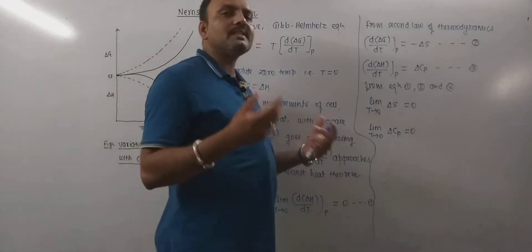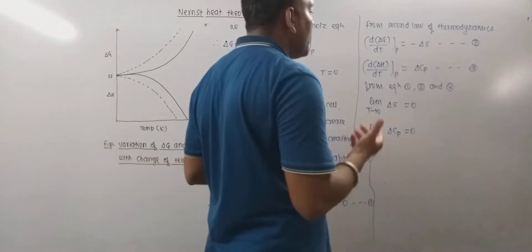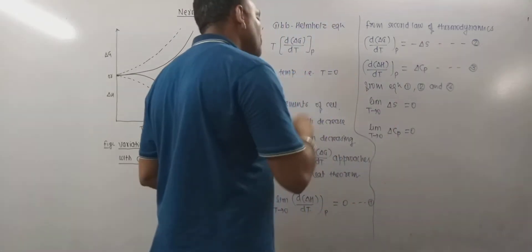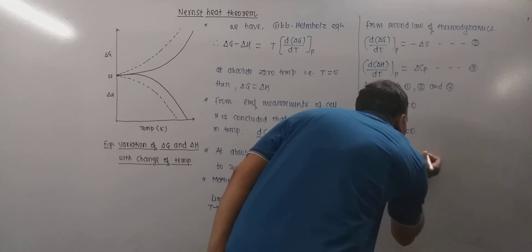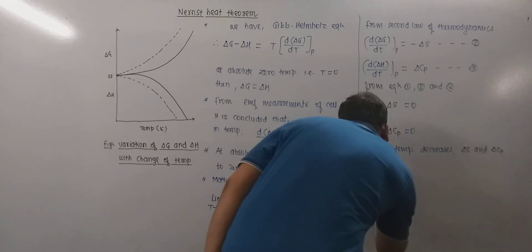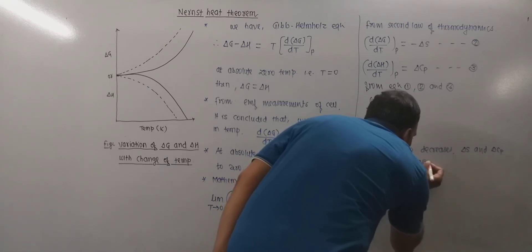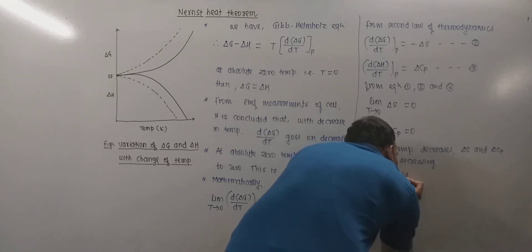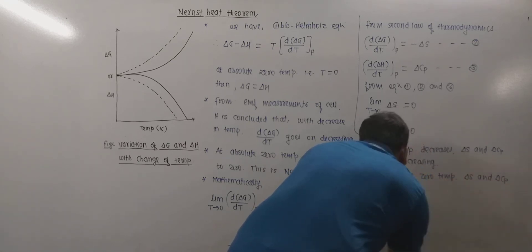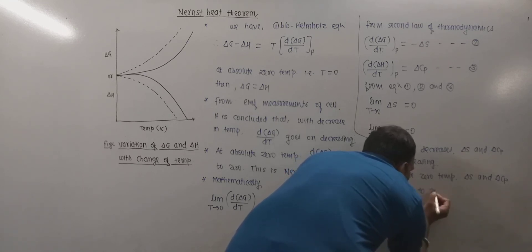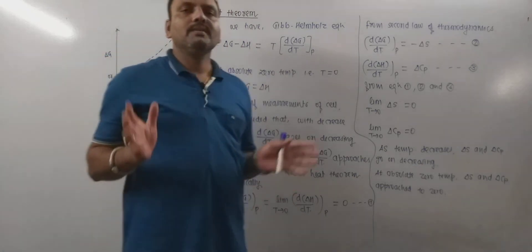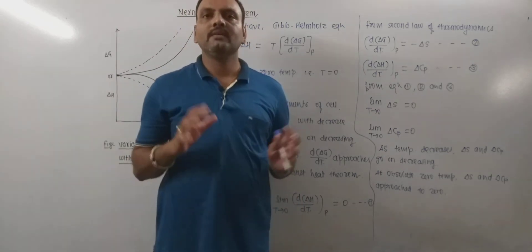With decrease of temperature, ΔS and ΔCp go on decreasing, and at absolute zero temperature ΔS and ΔCp approach zero. This forms the basis of the Third Law of Thermodynamics. This was the Nernst Heat Theorem, which holds good in the case of pure solids. Thank you very much.